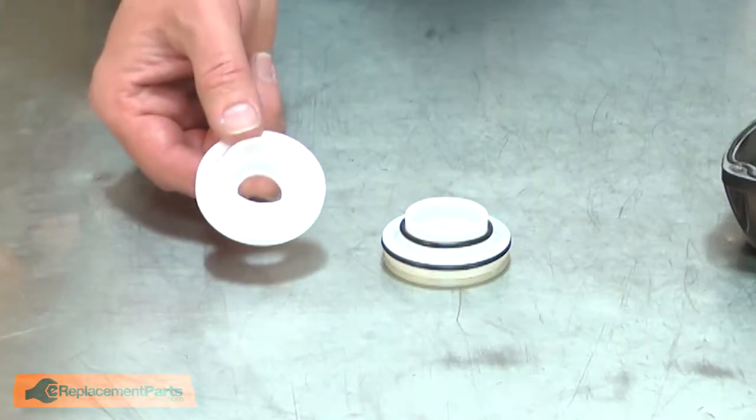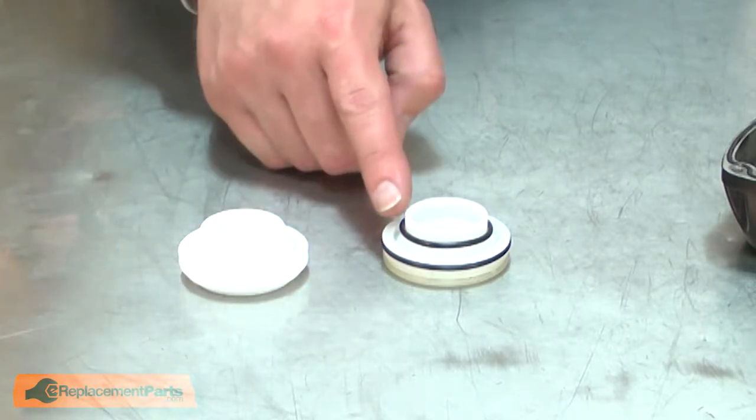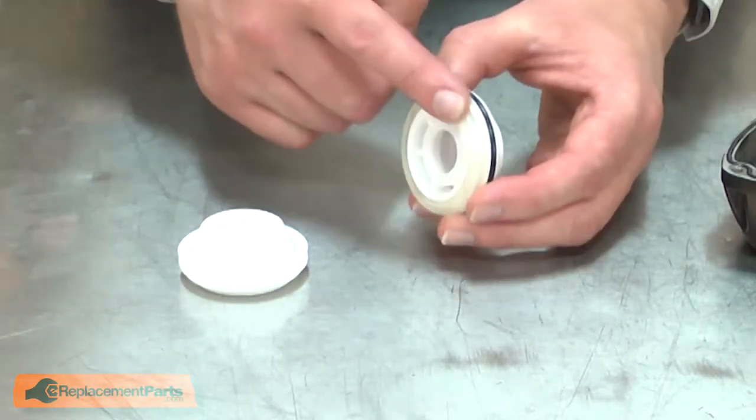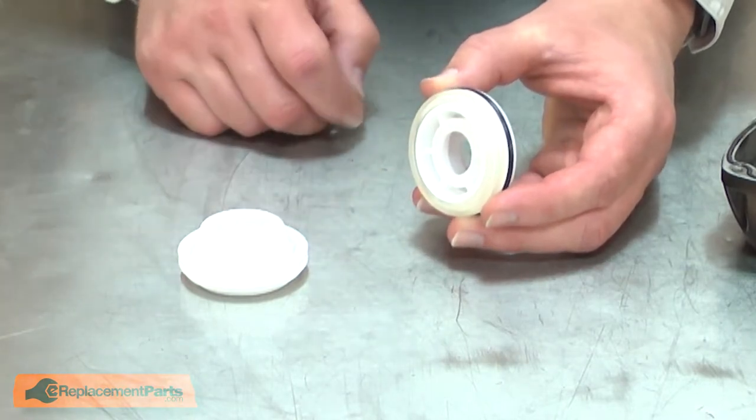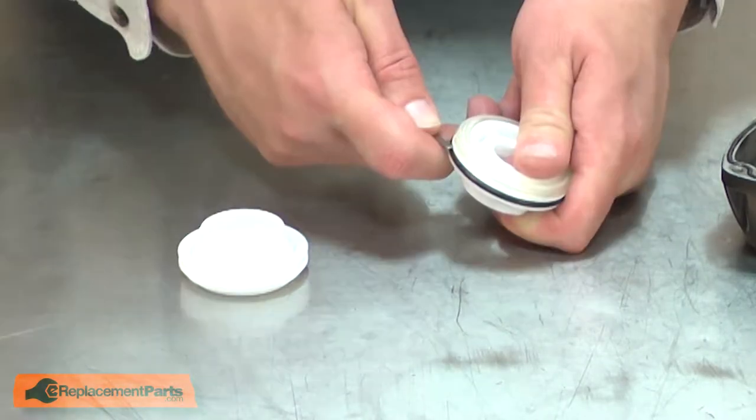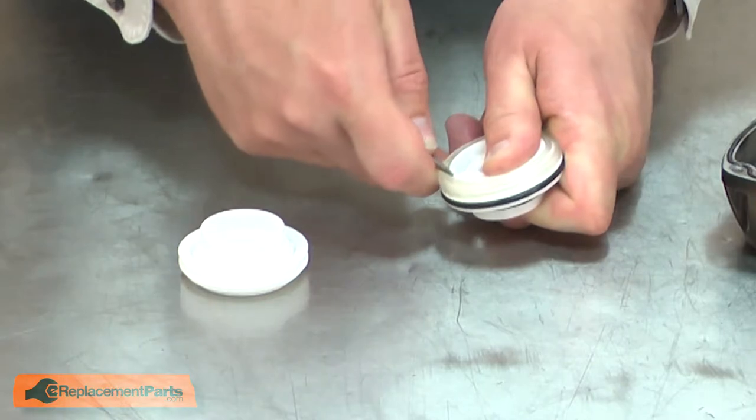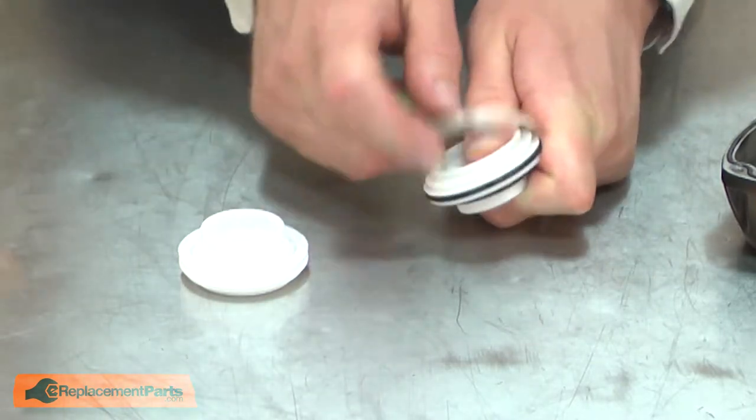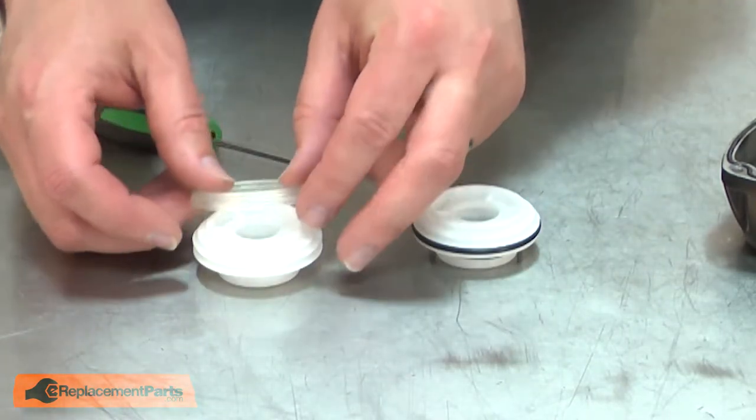Now I can install the new head valve body. I'll need to transfer both O-rings and the seal from the old body to the new. I'll start with the seal. I'll carefully use a small screwdriver to remove it and install it on the new body.